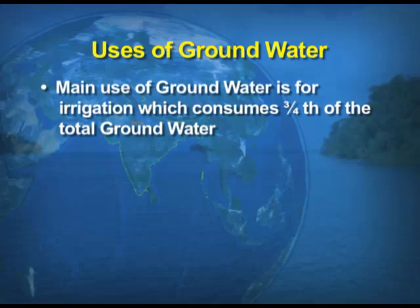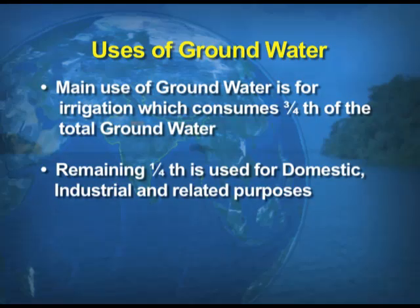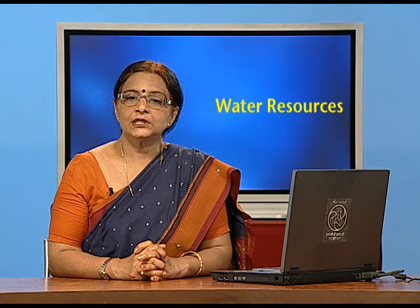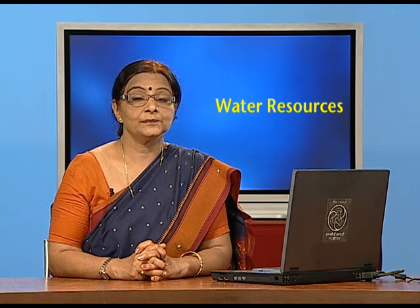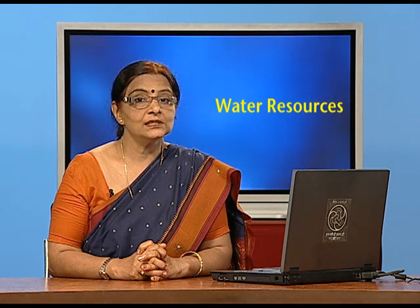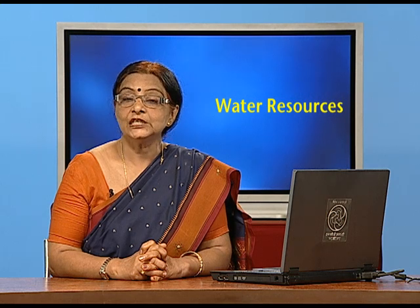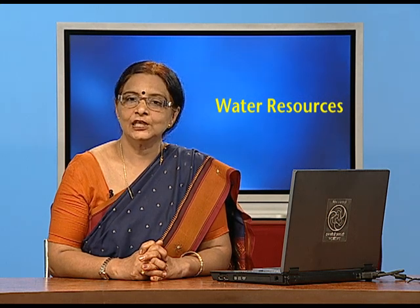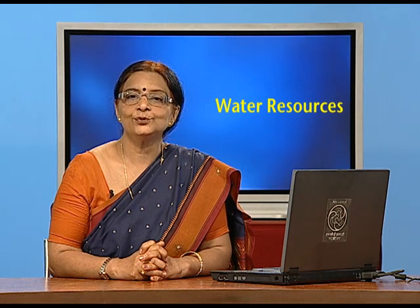The main use of groundwater is irrigation, which consumes about three-fourths of the total groundwater. India being an agrarian economy, there is a lot of pressure of agriculture on the land, and for that agricultural produce we depend on irrigation. The remaining one-fourth is used for other purposes. So far, only around 38% of the total available groundwater resources have been developed; the rest remains potential resources that can be developed for various purposes.